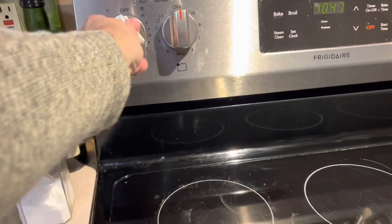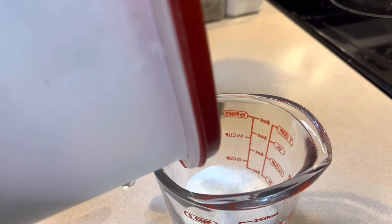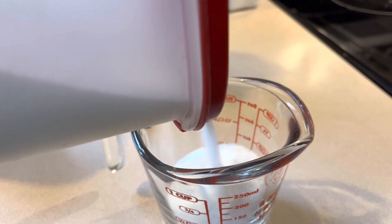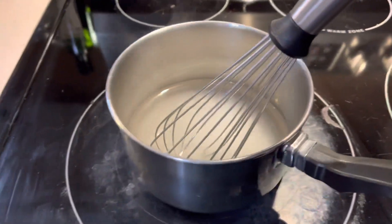Then begin preparing your simple syrup. This is going to be a peppermint extract simple syrup. So you want to do equal parts here as well. Half a cup water, half a cup sugar. Turn it to medium heat and stir.